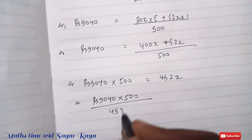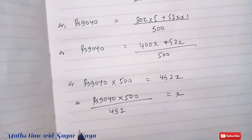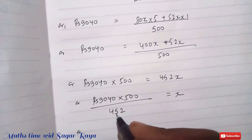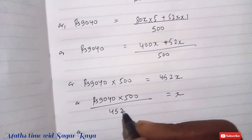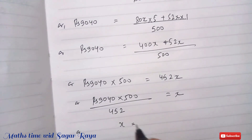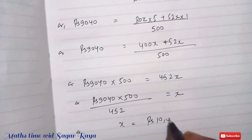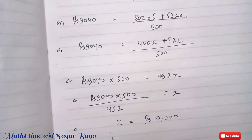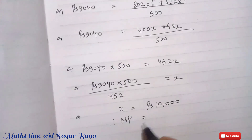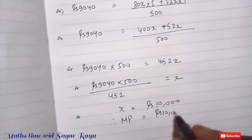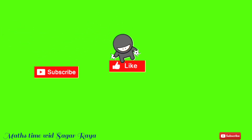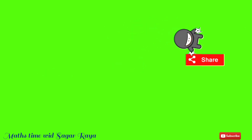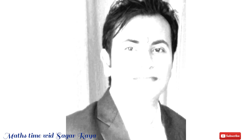Dividing both sides by 452: X equals 9,040 times 500 divided by 452, which gives exactly 10,000. Therefore, the mark price equals rupees 10,000, which is the required answer. Please subscribe, like, and share my videos with your friends. See you soon with more educational videos. Thank you!